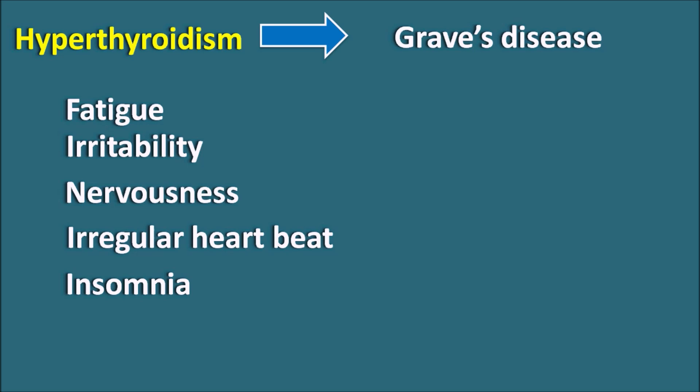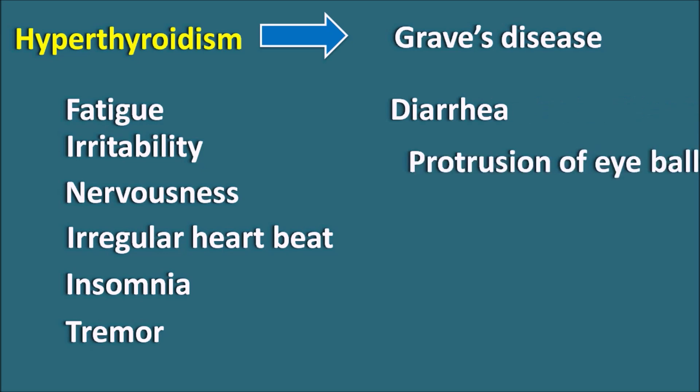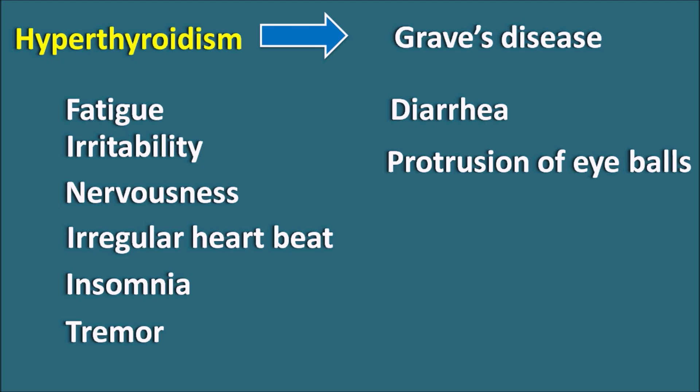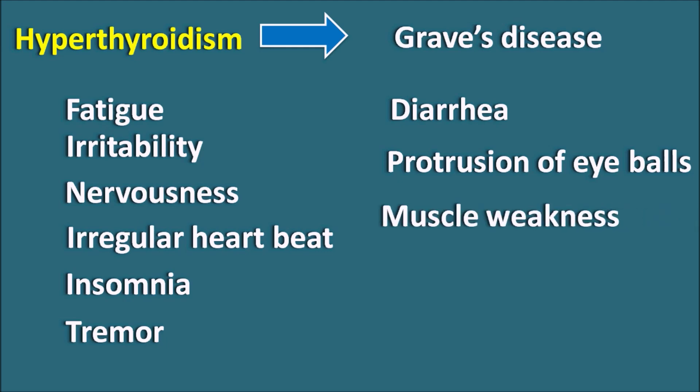Apart from these symptoms, it can also produce tremor in patients and diarrhea, as it can alter the movement of the bowel. Protrusion of the eyeballs is also seen — Graves' disease is associated with protrusion of eyeballs, which is why it is called exophthalmic hyperthyroidism. Other symptoms like muscle weakness and hyperthermia can also be observed.